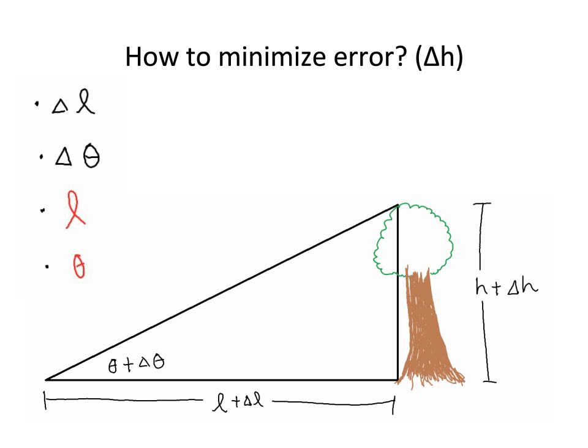And so, what you have to think about is, how far away should I stand from the tree, which is changing the l and also changing the theta, so that we can minimize delta h.